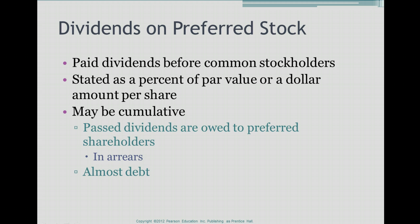How do you distinguish whether preferred stock is cumulative or non-cumulative? If it is non-cumulative, the wording on the stock will say 'non-cumulative preferred stock.' If it does not say non-cumulative, you assume that the stock is cumulative, and whenever they do pay dividends, any dividends that are in arrears must be paid before the common stockholders are paid their dividend.